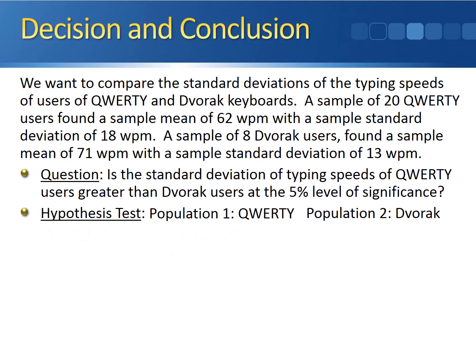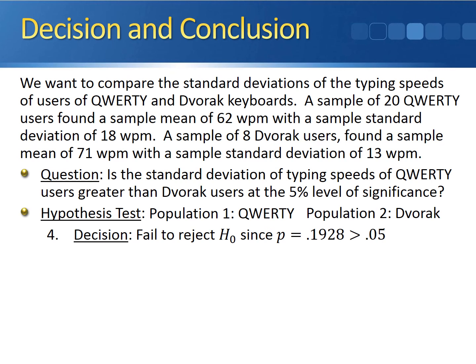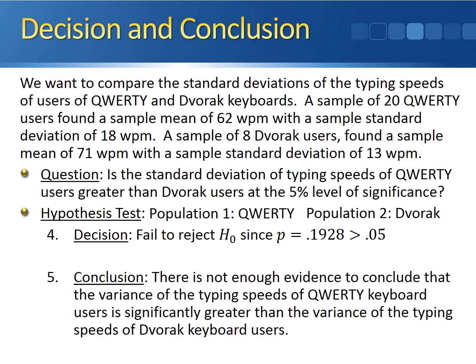With a relatively large p-value, the decision is straightforward. We fail to reject the null hypothesis since the p-value of 0.1928 is greater than the level of significance of 0.05. Our conclusion is that there is not enough evidence to conclude that the variance of the typing speeds of QWERTY keyboard users is significantly greater than the variance of the typing speeds of Dvorak keyboard users.